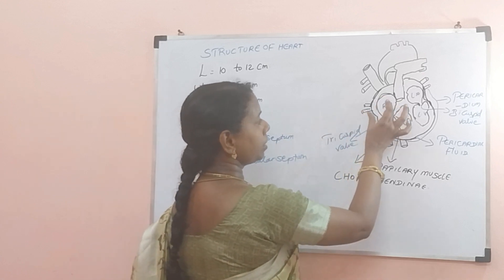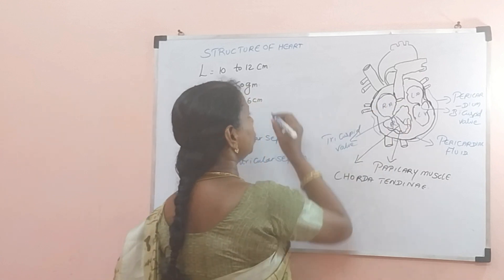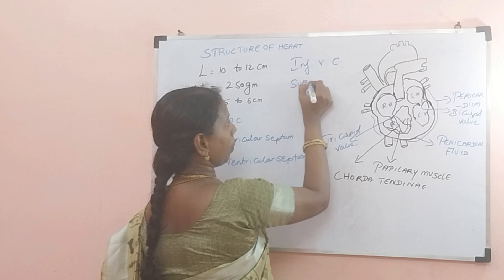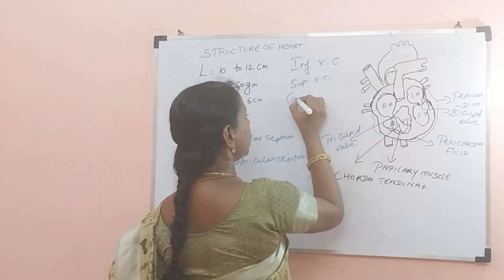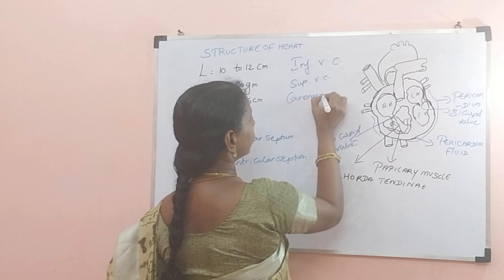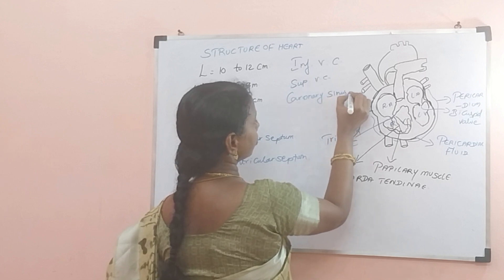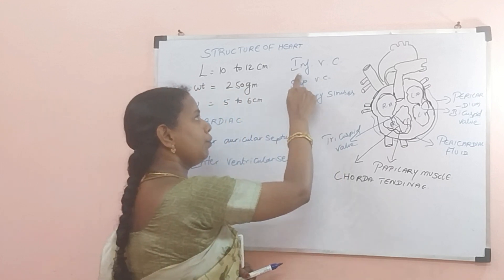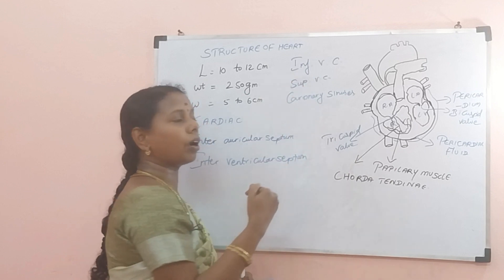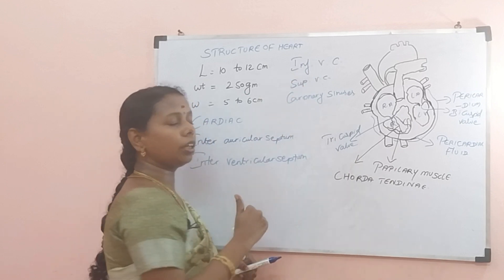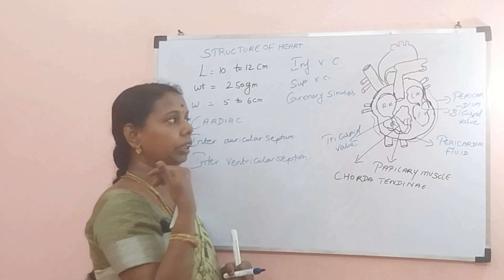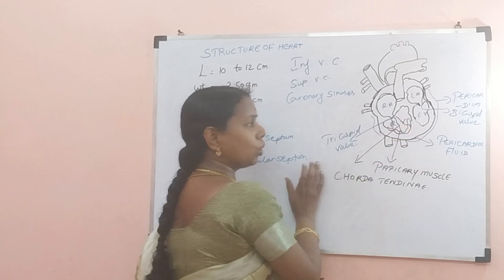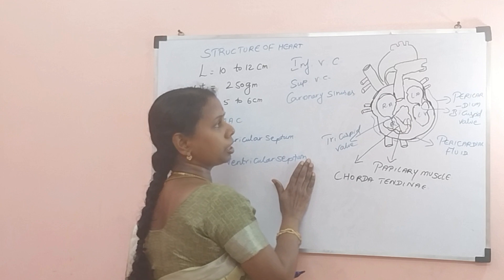The right side always receives impure blood through the inferior vena cava and the superior vena cava, and also coronary sinuses which bring impure blood from the heart itself. The inferior vena cava brings impure blood from the lower part of the body below the heart, and the superior vena cava brings impure blood from above the heart — from the head and shoulders. When it contracts, blood comes to the right ventricle, and from there it goes to the lungs for purification — that is pulmonary circulation.